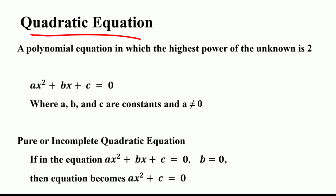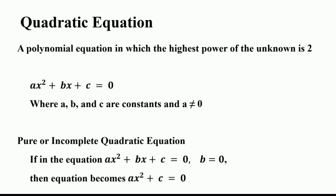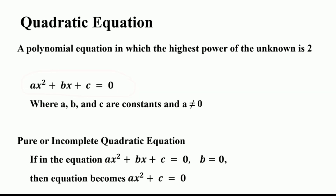Now we have another type of equation known as a quadratic equation. It is a polynomial equation in which the highest power of the unknown is equal to 2. A quadratic equation is also called a second degree equation in the unknowns. The general or standard form is ax squared plus bx plus c is equal to 0, where a, b, and c are constants and a is not equal to 0.